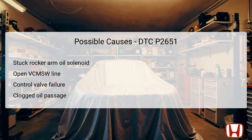Several potential causes could trigger the P2651 code, each warranting careful inspection. First, the Rocker Arm Oil Control Solenoid B might be stuck, failing to regulate oil pressure adequately as commanded by the PCM. Additionally, an open circuit in the VCMSW line, which connects the Rocker Arm Oil Pressure Switch to the PCM, could prevent proper communication and readings. Another possibility includes a failure within the Rocker Arm Oil Control Valve itself, thus disrupting its functionality. Lastly, oil passages may become clogged due to debris, maintaining inappropriate oil pressure levels, which would also prompt an abnormal reading from the oil pressure switch. Each of these causes contributes to the malfunction, requiring thorough examination during troubleshooting.